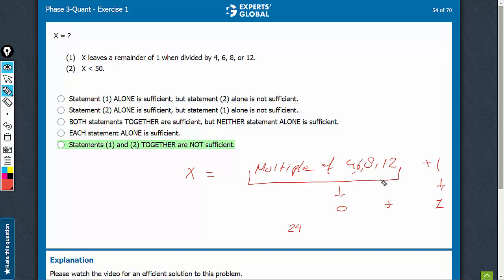The LCM of 4, 6, 8, 12, so x is 24k plus 1. 24, 48, 72. All such values plus 1 would satisfy the condition given here.